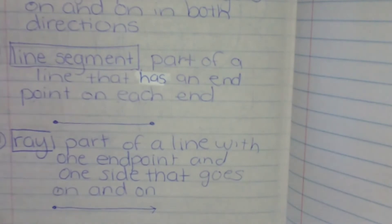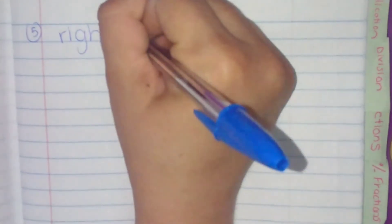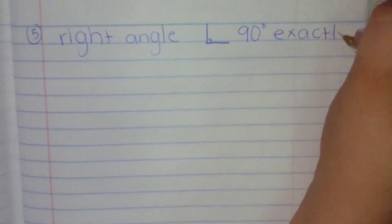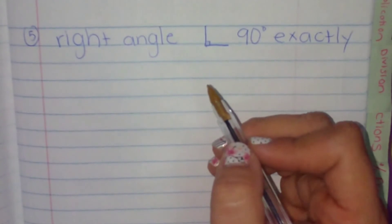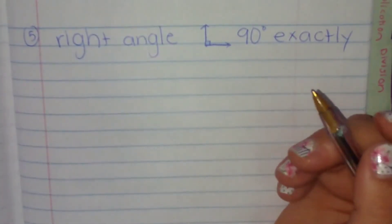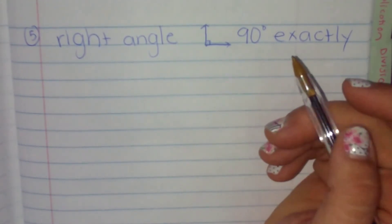Now if you need to pause the notes at this point or any point during the video, you're more than welcome to. The next definition that we're going to go over are angles. A right angle. A right angle is 90 degrees exactly. And you usually can tell it's 90 degrees because of this little box. Now what is an angle? An angle is where two lines meet or intersect. The word is intersect.